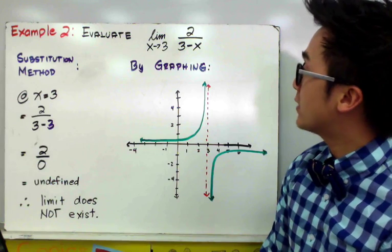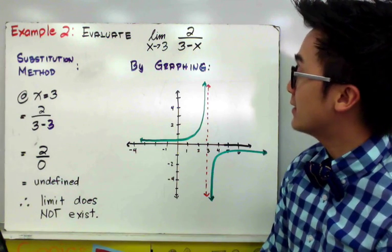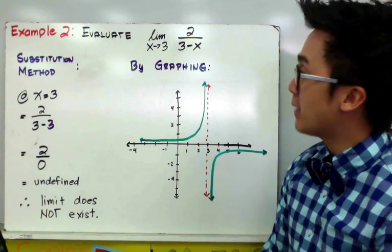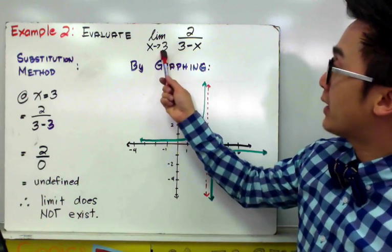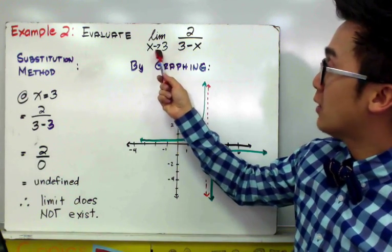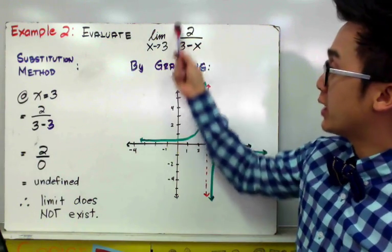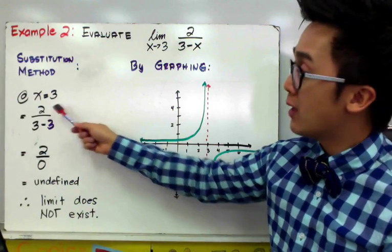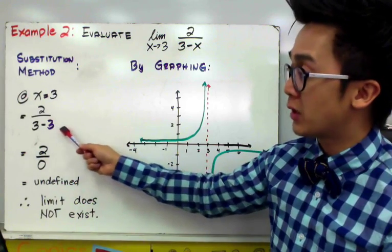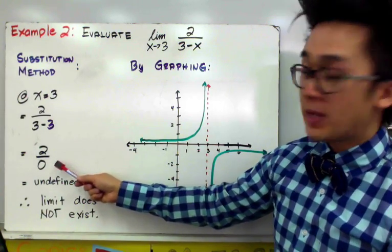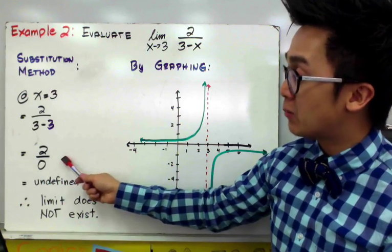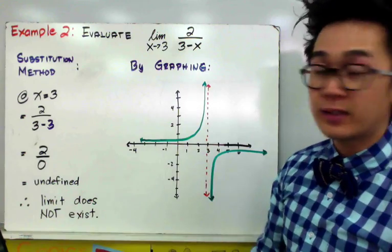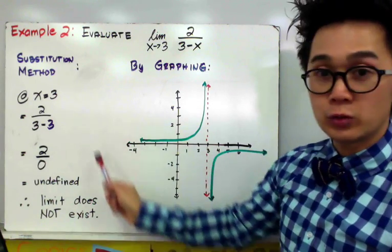To evaluate the limit of 2 over 3 minus X as X approaches 3, we can use the substitution method by plugging in X equals 3. Substituting gives us 2 over 3 minus 3, which is 2 over 0. Since any number divided by 0 is undefined, this particular limit does not exist using the substitution method.